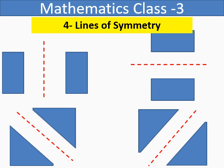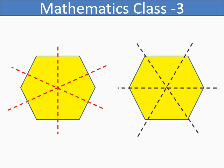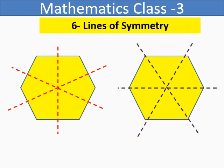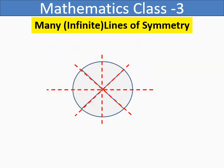Similar to that, if you take a hexagon — drawing lines passing from the sides of the hexagon gives three lines of symmetry, and drawing lines passing through the corners or vertices of the hexagon gives another three lines of symmetry. So in total, we have six lines of symmetry in the hexagon, which has six sides. In a circle, you can get several lines of symmetry — so we can say we have many or infinite lines of symmetry in the circle.